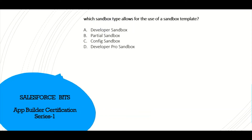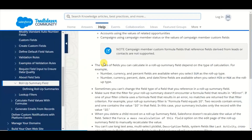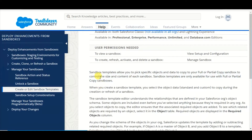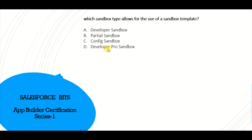Next question: which sandbox types allow for the use of sandbox templates? A sandbox template lets you pick specific objects and data to copy to your sandbox to control its size and content. The documentation says templates are available only in full and partial sandboxes. Since there is no full sandbox option listed in the answers, the correct answer is B — partial sandbox.